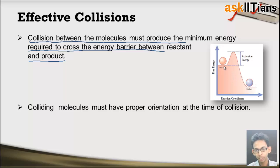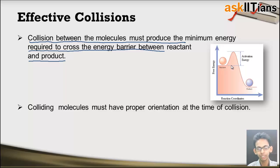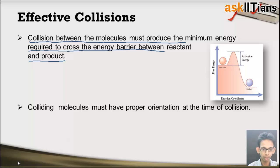So the collisions between the reactants must produce this minimum amount of energy equal to activation energy so that the reaction can take place. Not all collisions are effective — only those which produce a minimum amount of energy equal to or greater than the activation energy. So this is the first criteria for a collision being effective.